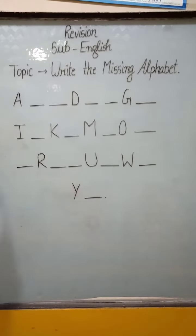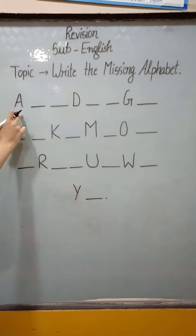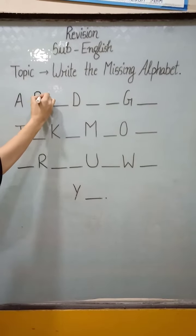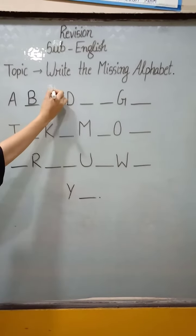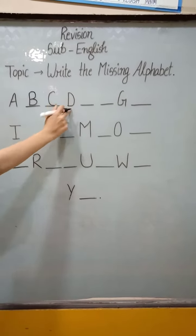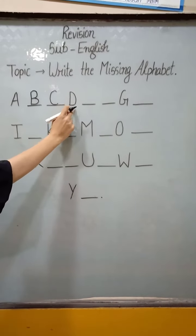Our first letter is A. What we fill after A? B. Then C. D is already present. Now what comes after D?